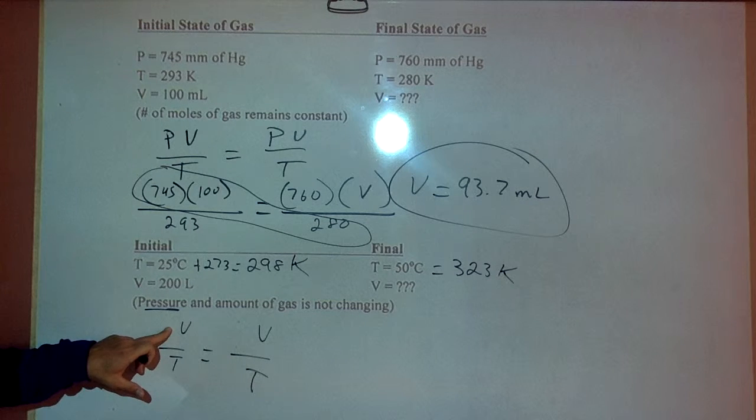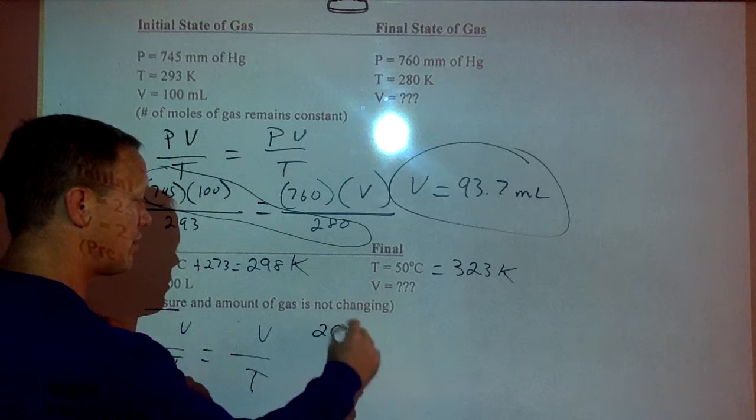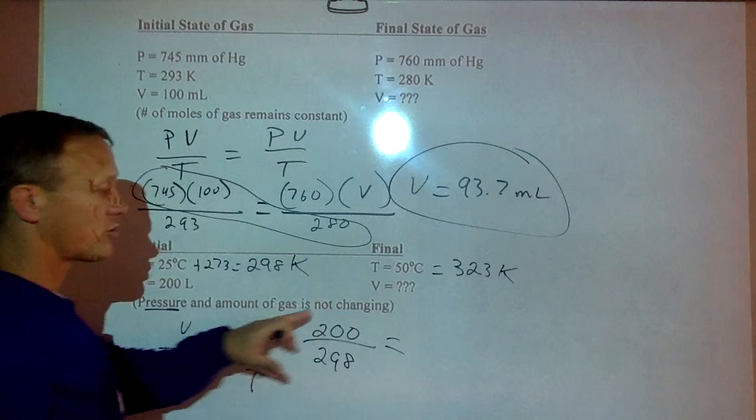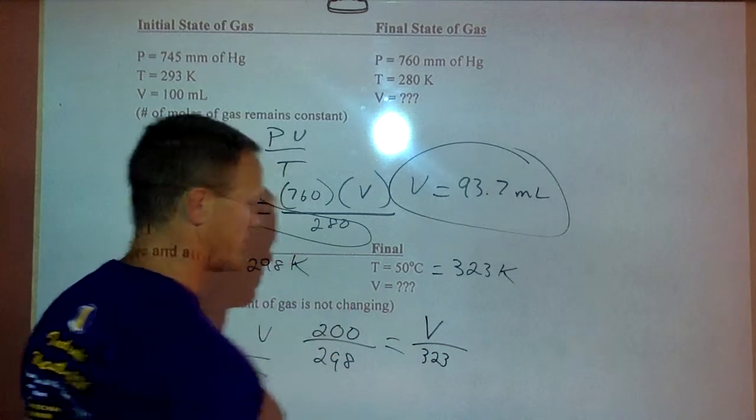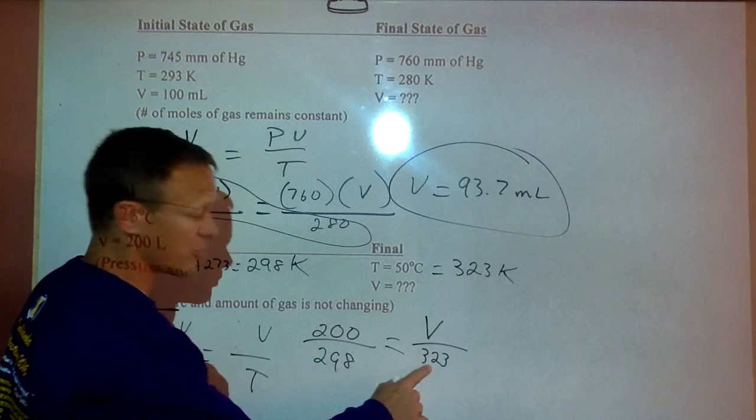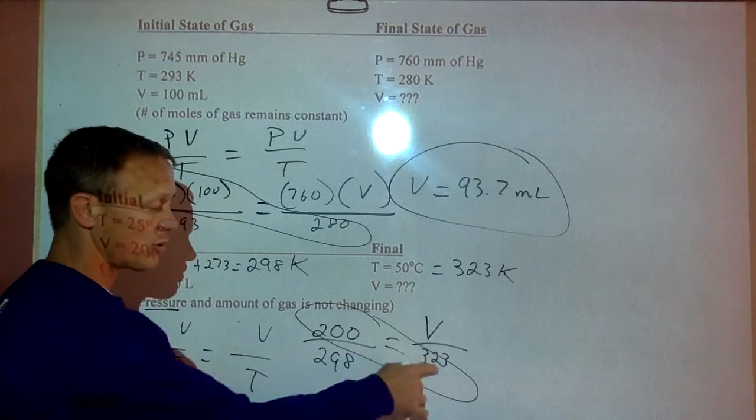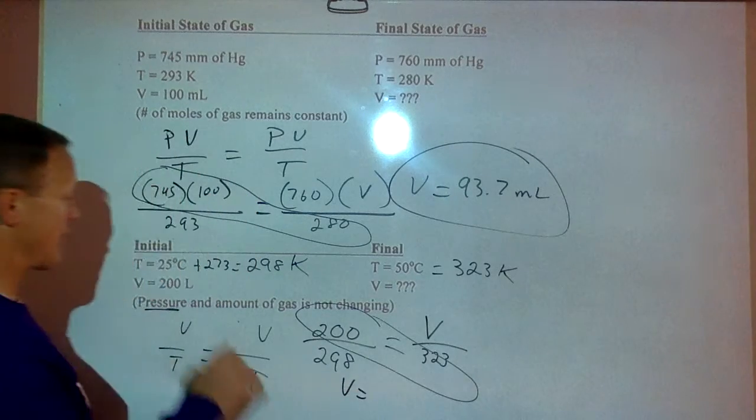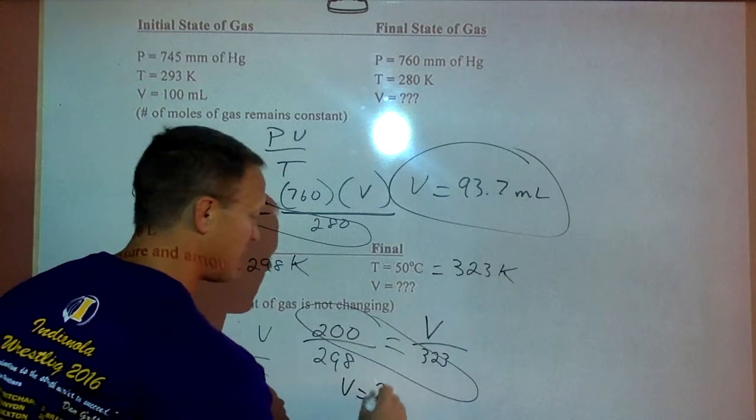We'll plug in when the volume is 200 milliliters and the temperature is 298 Kelvin. What is the new volume when our temperature goes up to 323 Kelvin? We're increasing the temperature so our volume should get bigger. Again, multiply where there's no variable. I'm going to multiply those two numbers, divide by every number left over. There's just a 298 left over. Our volume should have gotten bigger than 200. Our answer here is 216.8.